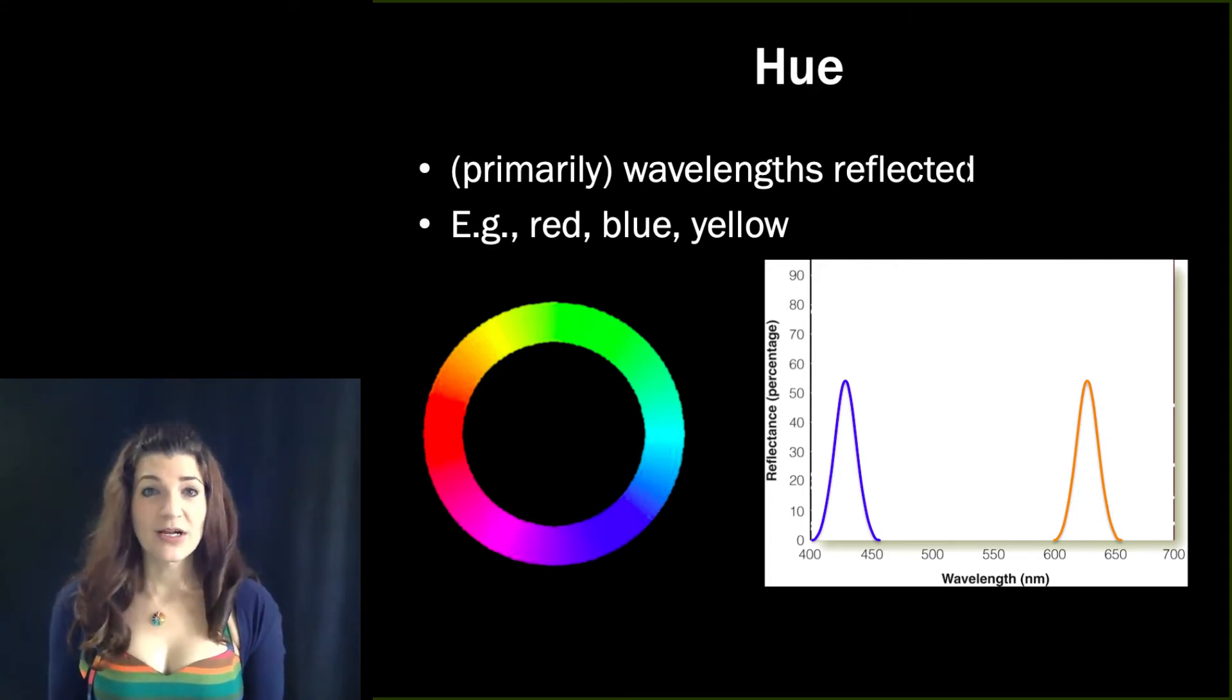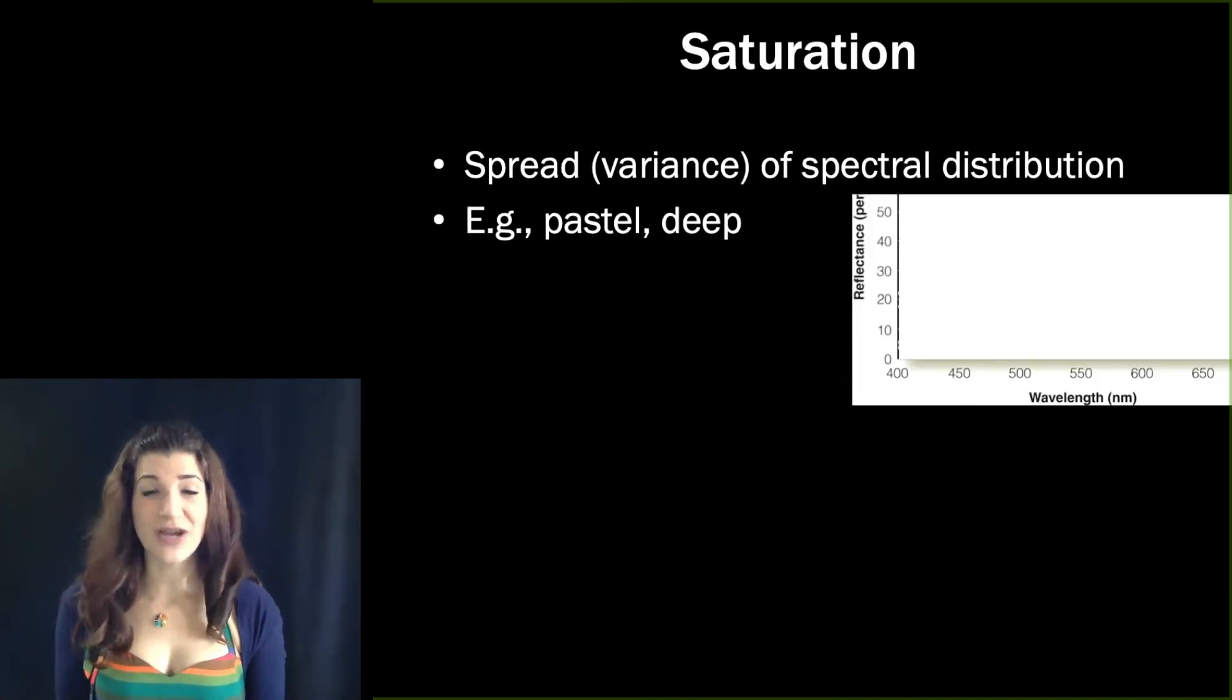So colors can differ from one another in hue. They can also differ from one another in how saturated they are. So saturation refers to the purity of the light. We can talk about colors in terms of being pastel or deep. And those are features that have to do with saturation.